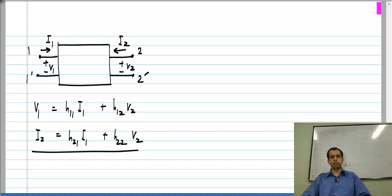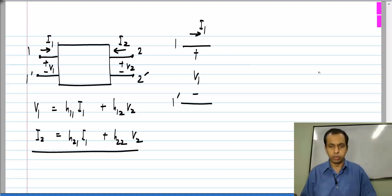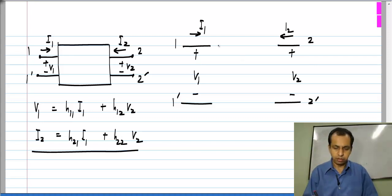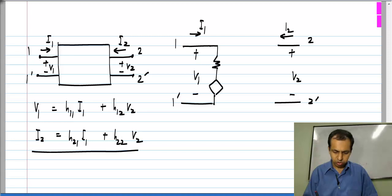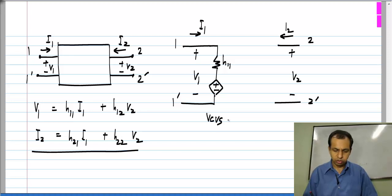As you would expect from the name hybrid parameters, the equivalent circuit is also a hybrid: on one side it will have series branches and on the other side parallel branches. Let us say port 1 has V1 across it and I1 through it, and port 2 has V2 across it and I2 through it. V1 is the sum of two drops: we have a resistance of value H11 and a controlled source. Since this part of V1 depends on V2, this is a voltage-controlled voltage source with proportionality constant H12, i.e., its value is H12·V2.